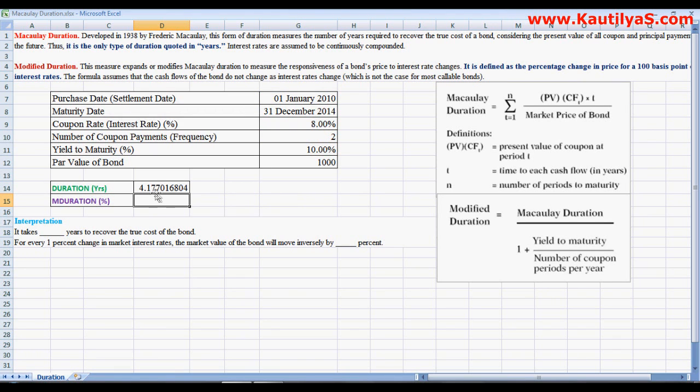So 4.117. That means it takes 4.117 years to recover the true cost of the bond. So duration is measured in years. Where actually the bond is of five years, whereas it takes 4.177 to recover the true cost of the bond.